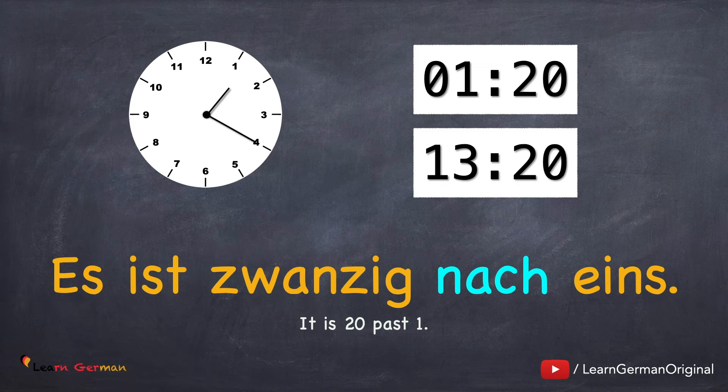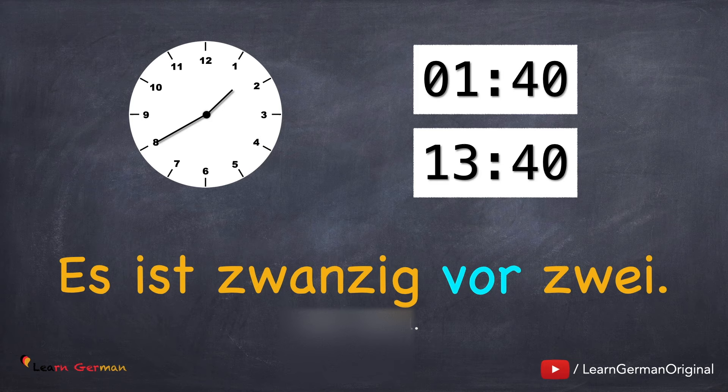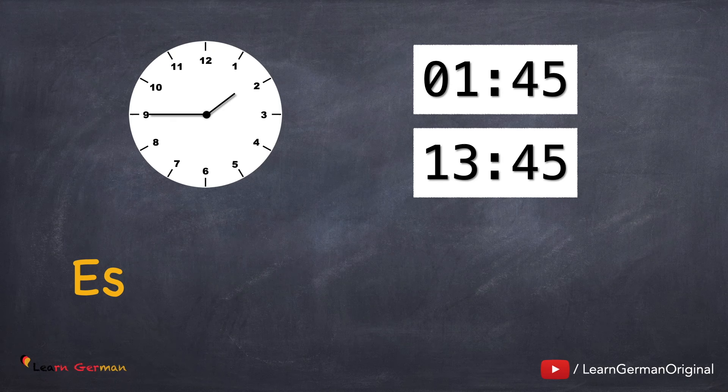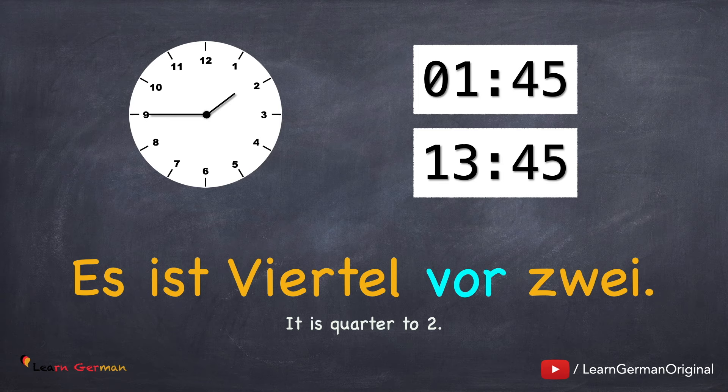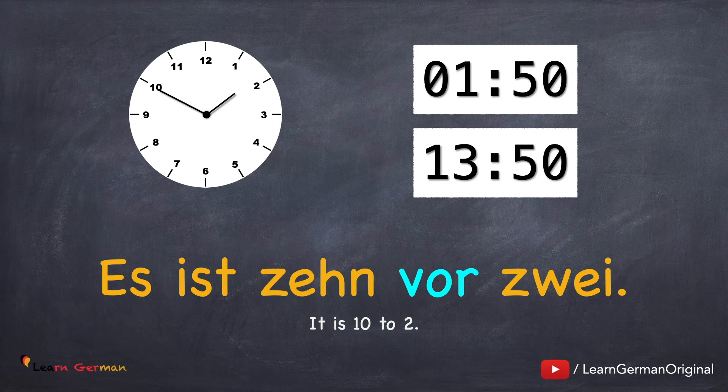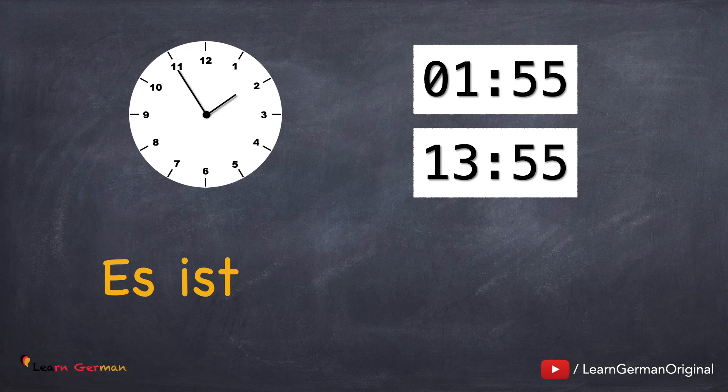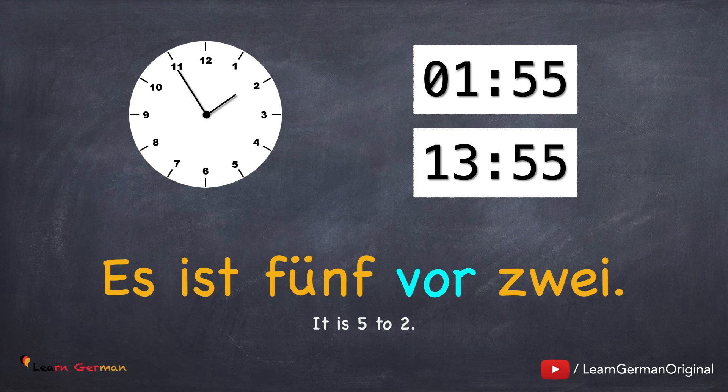Let's see a slightly different one now. Es ist zwanzig vor zwei. Es ist viertel vor zwei. Es ist zehn vor zwei. Es ist fünf vor zwei. As you all must have already noticed, vor is used to represent before.